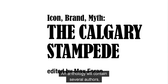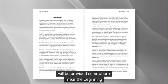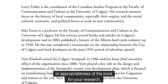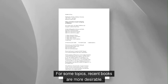Additional information about the authors will typically be provided somewhere near the beginning or end of the book — in this case, in a contributor section. This information may help you assess the usefulness or appropriateness of the book for your research. The publisher will also be listed, along with publication information including when the book was published. For some topics, recent books are more desirable; for others, currency is less of a concern.